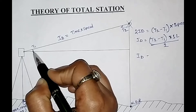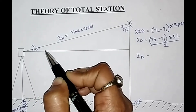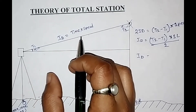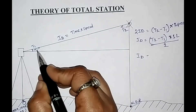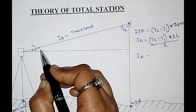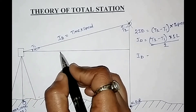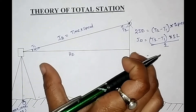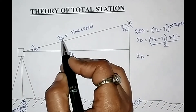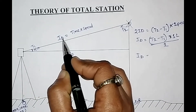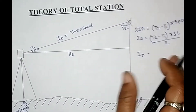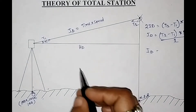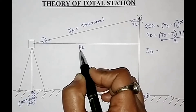A vertical angle is formed here, that is alpha degree, which is calculated by the total station according to the tilting done during bisection. So this is our alpha angle — our vertical angle. Now we have to find out the horizontal distance HD. If we find out this horizontal distance with the help of the vertical angle and the inclined distance, we can easily calculate the northing, easting, and elevation values.